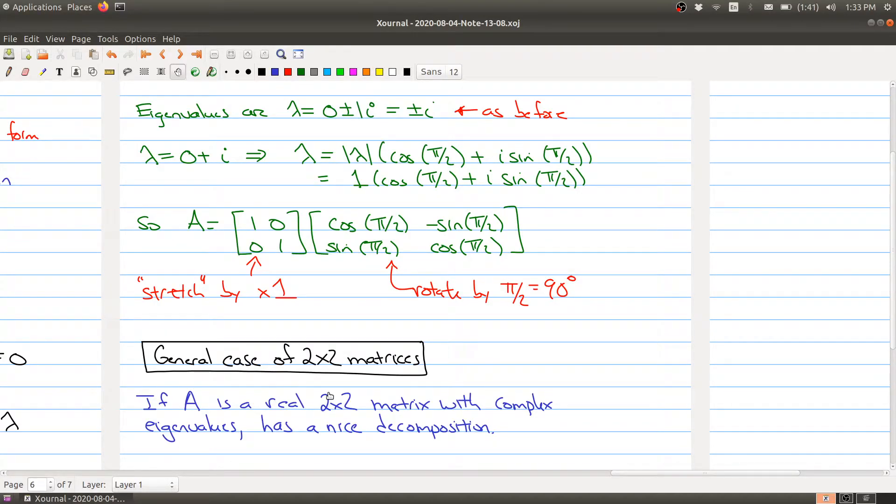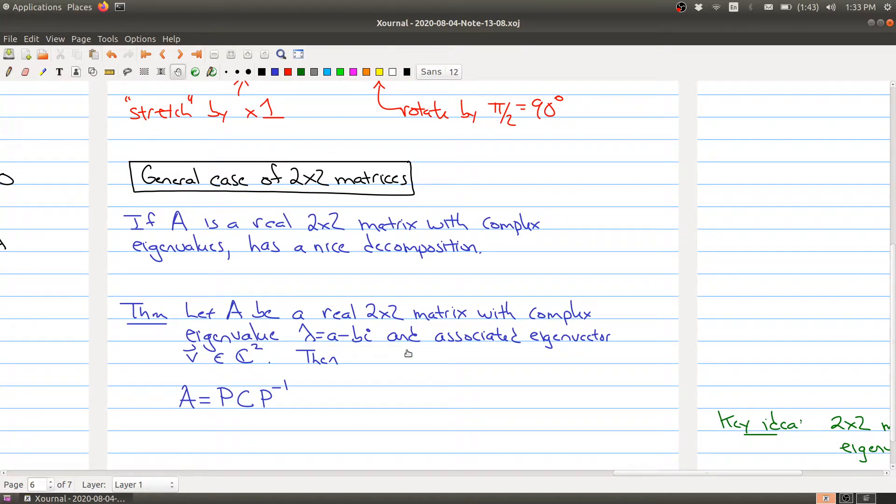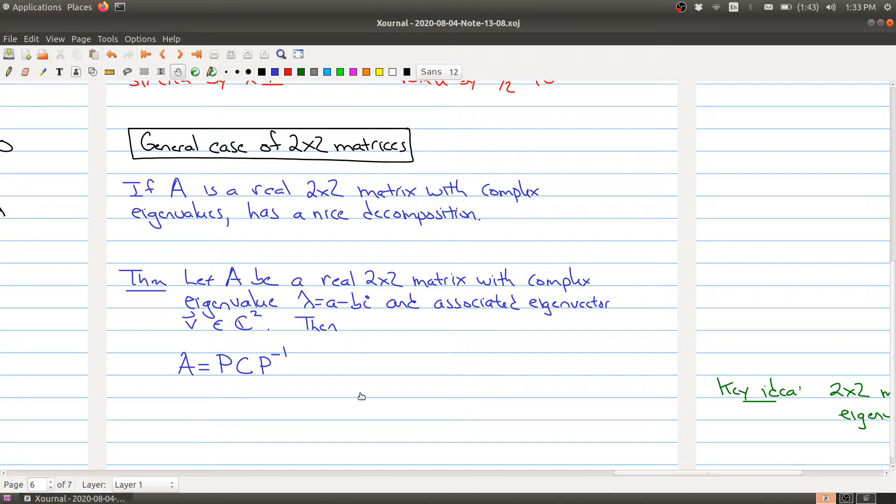Welcome to the last part where we're going to move to the general case of 2 by 2 matrices. In particular, we're interested in saying that if A is a real 2 by 2 matrix with complex eigenvalues, what can we say that's happening? It turns out that in this situation there's a very nice decomposition of our matrix.